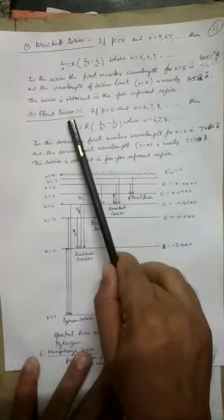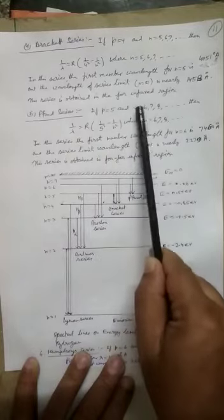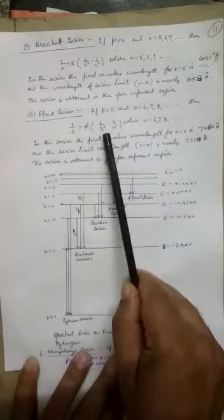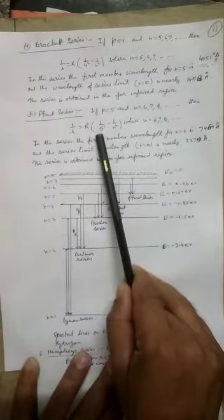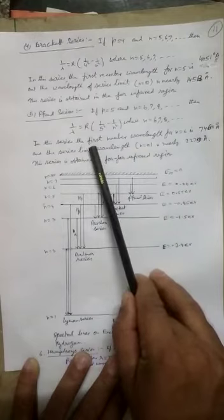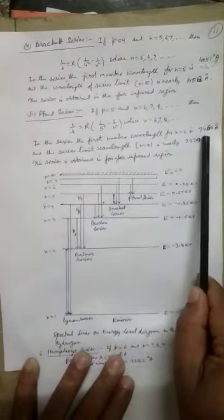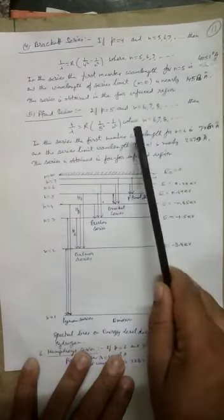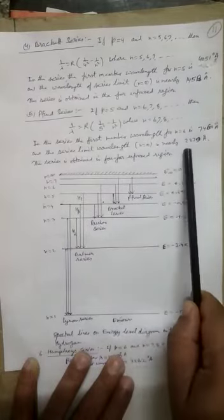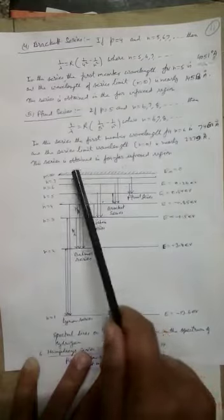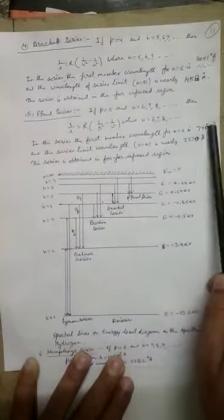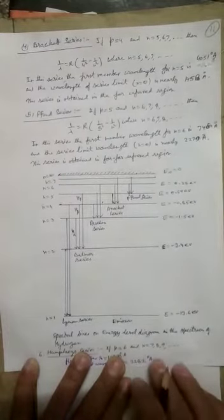The next series is the Pfund series. If we put p equal to 5 and vary n as 6, 7, 8, etc., we get the Pfund series. The first member, putting n equal to 6, comes out to be 7460 angstrom, and the series limit wavelength when we put n equal to infinity comes out to be 2279 angstrom. This series also lies in the infrared region, but the far far infrared region.